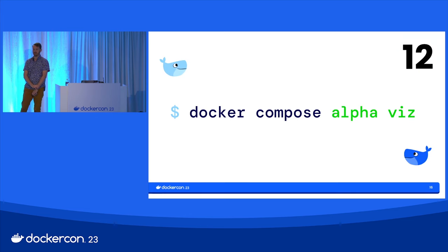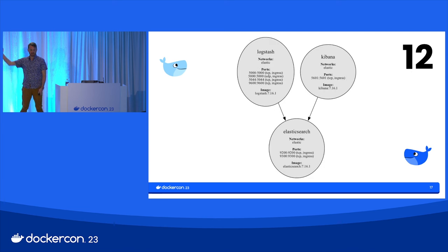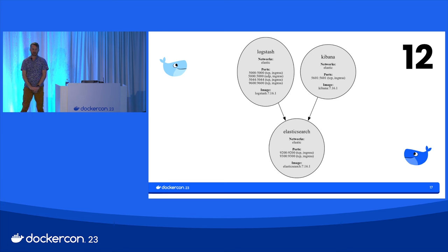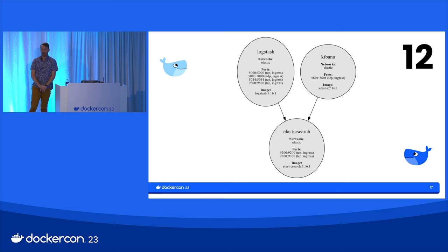Now for experimental stuff: docker compose alpha viz. This is an exciting community contribution that generates a Graphviz visualization from your Compose project with dependencies and networks. Using an ELK stack sample, we can see Elasticsearch which Kibana and Logstash both depend on. I've configured it to output ports and networks. It's a really cool way to visualize your project — you might want to stick this into your wiki to help new people onboard.